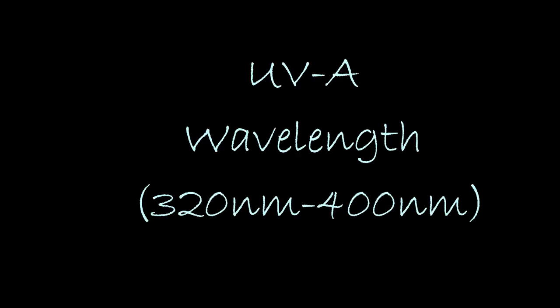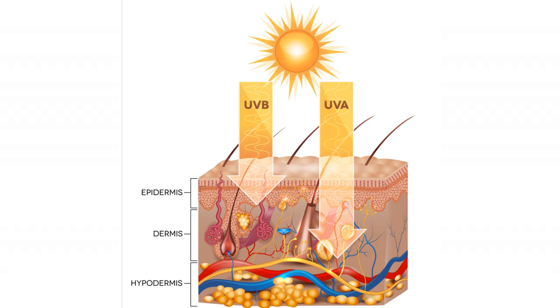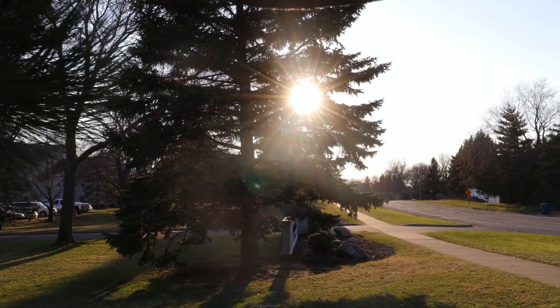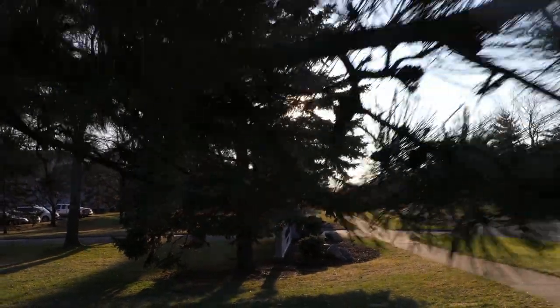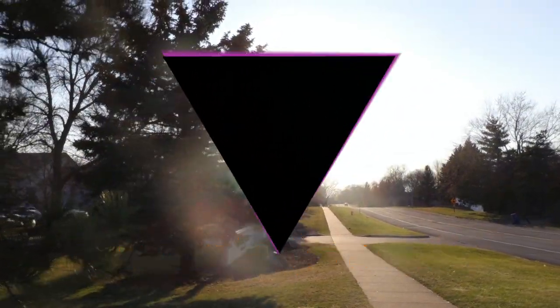Let's talk about UVA rays. UVA has a wavelength of 320 nanometers to 400 nanometers, which is much longer in comparison to UVB. These rays penetrate our skin and are the reason for many different skin problems, such as skin tan, sunburns, and wrinkles. UVA is so powerful that our atmosphere and ozone layer cannot fully absorb it, and it can easily penetrate clouds and windows.